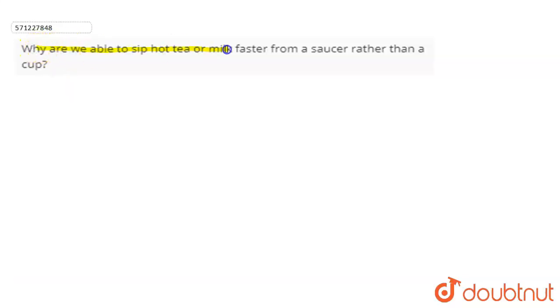So in this question we have to find out why we are able to sip hot tea or milk faster from a saucer instead of a cup.